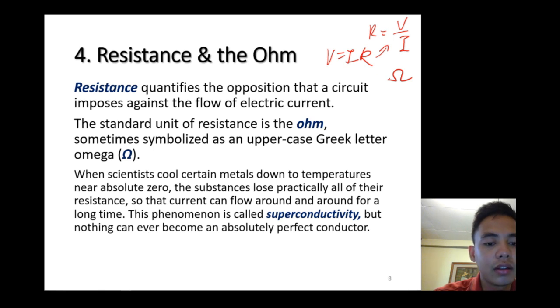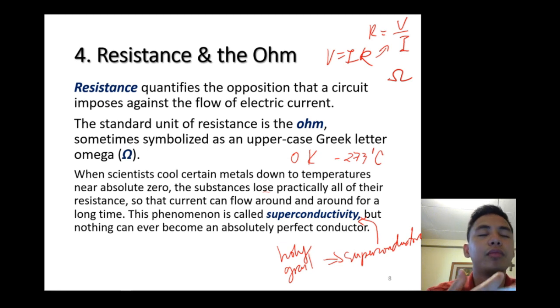When scientists cool certain metals down to temperatures near absolute zero, or what we call zero kelvin or negative 273 degrees Celsius, the substance loses practically all the resistance so that the current flows around and around for a long time. This phenomenon is what we call superconductivity. Those conductors exhibiting superconductivity we call superconductors. Scientists say this is the holy grail, because if we can have this kind of material, then our computers and smartphones will be more effective, more efficient, and even smaller.